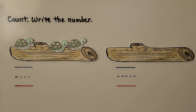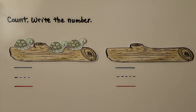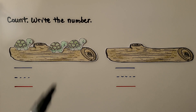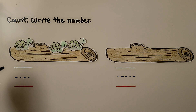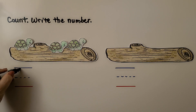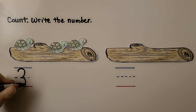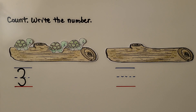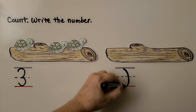Here we need to count the turtles and write the number. On this log, I see one, two, three turtles. There are three turtles on that log — we can write the number three. Can you count the number of turtles on this log? There's none. There's not any. And the number we use when there are none is zero. There are zero turtles on that log.